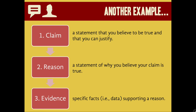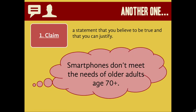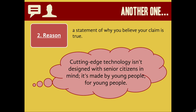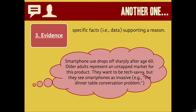Moving beyond the humorous, here's another example of the claim, reasoning, and evidence framework from my own research as someone who looks at how older adults use technology. Claim: I think that smartphones don't meet the needs of older adults age 70 and up — smartphones don't meet the needs of grandma. My reason: cutting-edge technology just isn't designed with senior citizens in mind; it's made by young people for young people. Think about your stereotype of a Silicon Valley startup entrepreneur — a twenty-something in a hoodie, not thinking about grandma when he puts together the latest app. So how can I back this up with evidence?